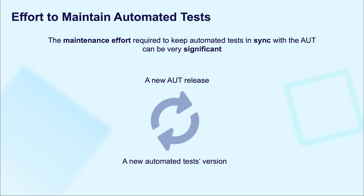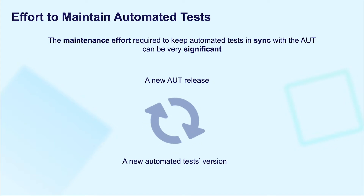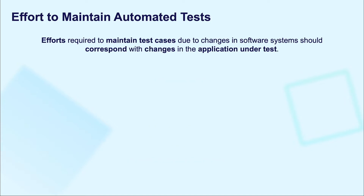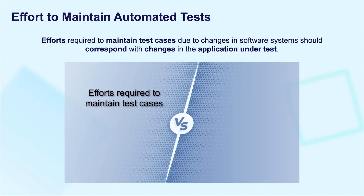Every software needs maintenance once there is a new release. In this case, the last external metric — the effort to maintain automated tests — is vital to keep automated tests in sync with the application under test and highlight when steps need to be taken to reduce maintenance effort. Measure of maintenance effort can be expressed as the total number of automated tests, or on average how long automated tests take to update to a new version. Efforts required to maintain the test cases due to changes in the software system should correspond with changes in the application under test.